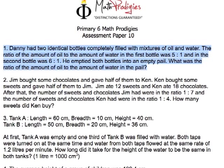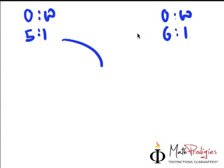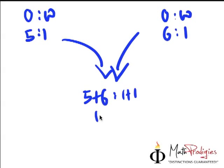Well, not as you would think. This is what most people would do. They would say oil to water in the first one is 5 is to 1, oil to water in the second one is 6 is to 1. If I were to empty it, I would simply get 5 plus 6 is to 1 plus 1, and the answer is 11 is to 2. And of course, that is completely wrong. This is not how we do this.